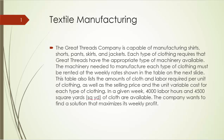Each type of clothing requires that Great Threads have the appropriate type of machinery available. The machinery needed to manufacture each type of clothing must be rented at weekly rates shown in the table. The table also lists the amounts of cloth and labor required per unit of clothing, as well as the selling price and unit variable cost. In a given week, 4,000 labor hours and 4,500 square yards of cloth are available.